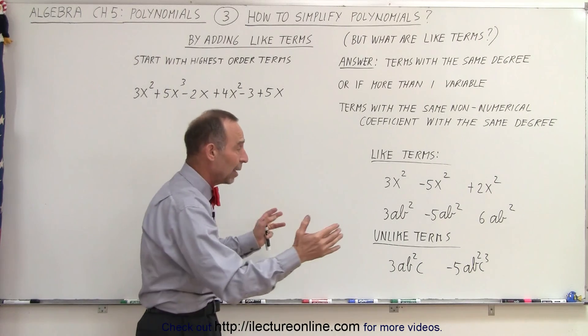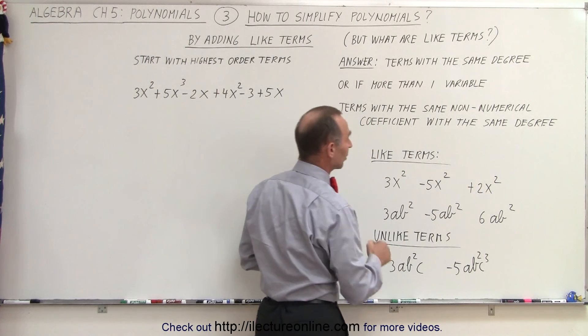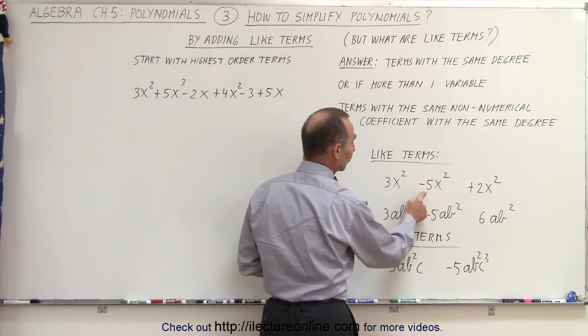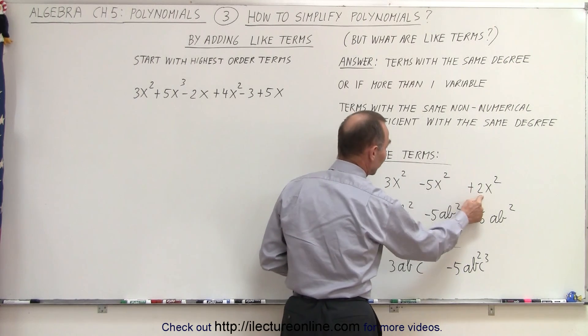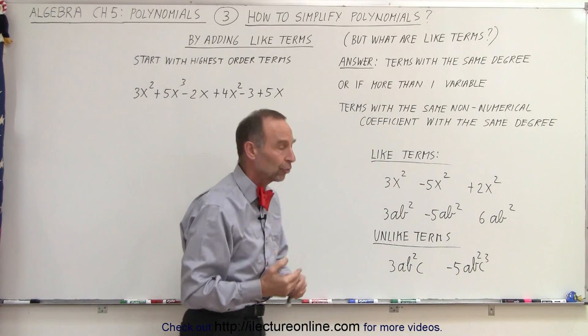They're unlike terms and we cannot add those together. These are like terms and they can be added together. For example, 3x² added to -5x² added to 2x². Well, 3 plus 2 is 5, minus 5 is 0. The answer would be 0 if we're to add those terms together.